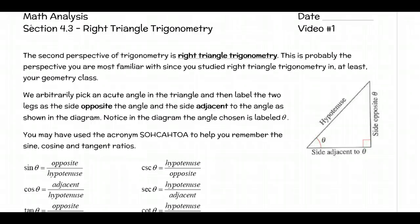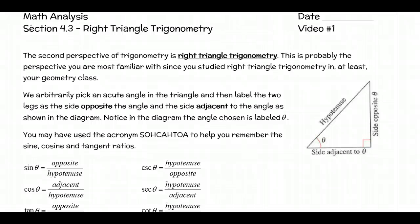In section 4.2, we were looking at the unit circle. In section 4.3, we're going to be looking at right triangle trigonometry. They're intertwined and so closely related that sometimes you can use one over the other, but it's important that you understand the relationships between them and how they do relate to each other.